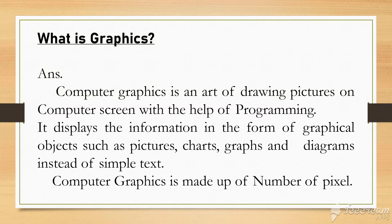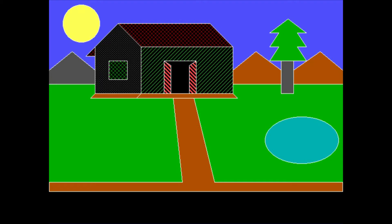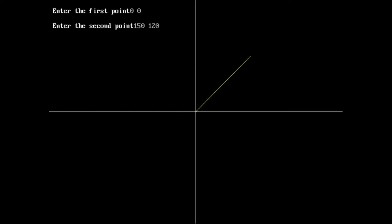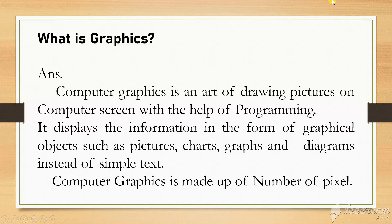What is graphics? Computer graphics is an art of drawing pictures on a computer screen with the help of programming. It displays the information in the form of graphical objects such as pictures, charts, graphs, and diagrams instead of simple text. Computer graphics is made up of a number of pixels.